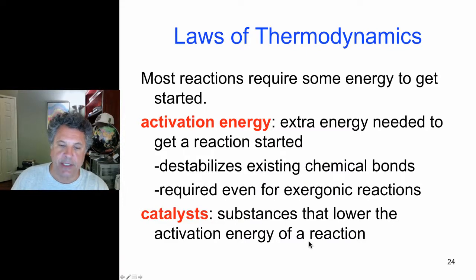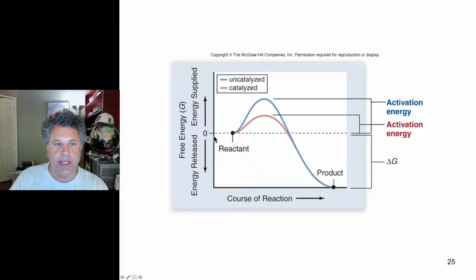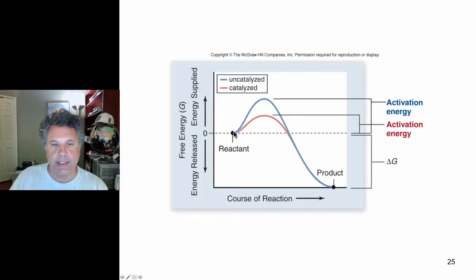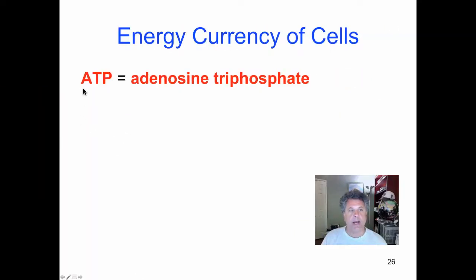Catalysts are substances that lower the activation energy of a reaction so that it can proceed more quickly. In biochemistry, catalysts are usually protein enzymes. On an energy diagram for an exergonic reaction, the activation energy hump is much lower with an enzyme catalyst than without one, speeding up the biochemical reaction even when delta G is already negative. We will continue next with ATP.